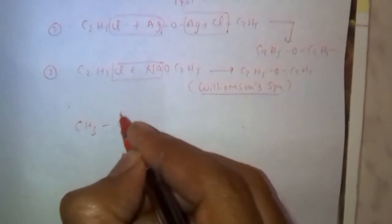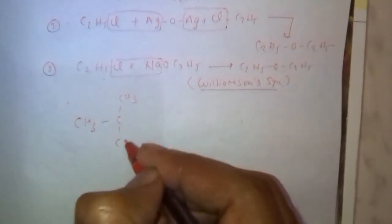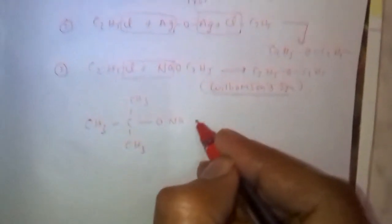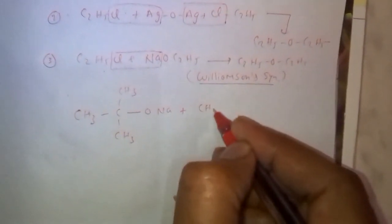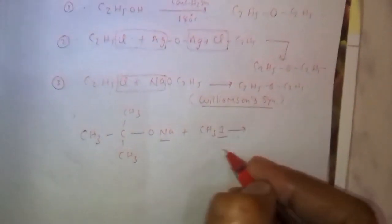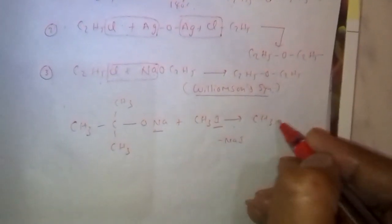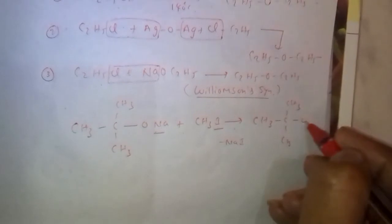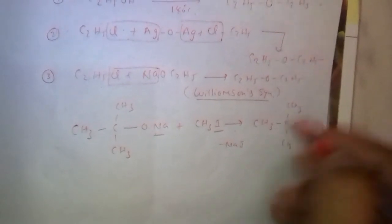Suppose this compound, sodium butoxide, reacts with methyl iodide CH3I. Then it gives rise to, I minus Na plus, minus NaI, it converts to ether. CH3OCH3. It forms ether. This one is also Williamson synthesis.